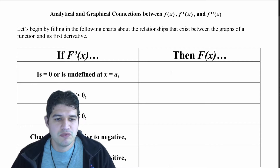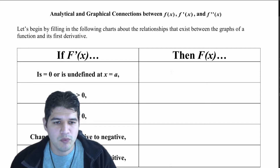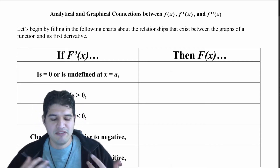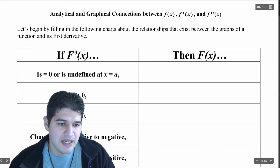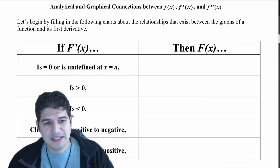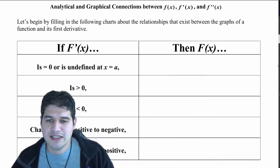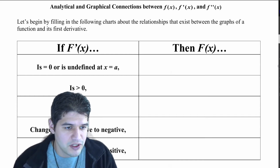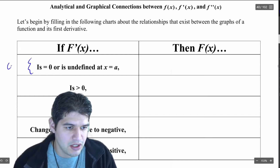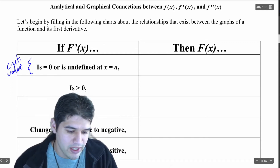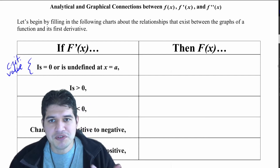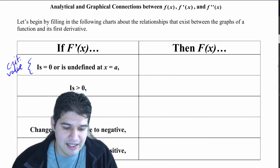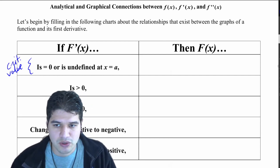We're going to recap what we know about f prime and f of x — what are those connections? So if f prime of x is zero or it's undefined at some value, these are called critical values, critical numbers, or critical points. What we want to remember for f of x is that that is a potential relative max or min.